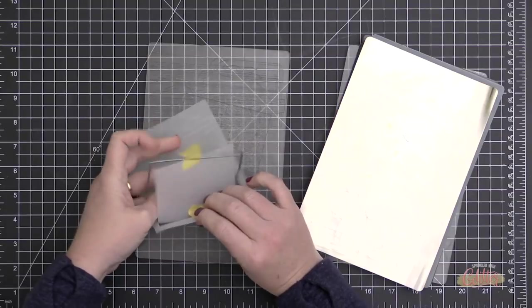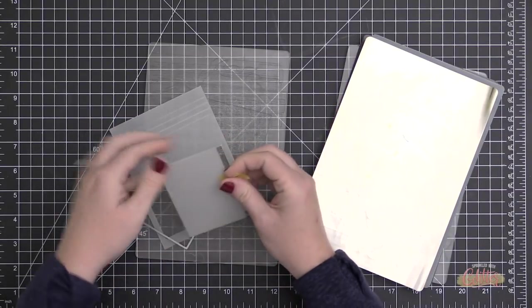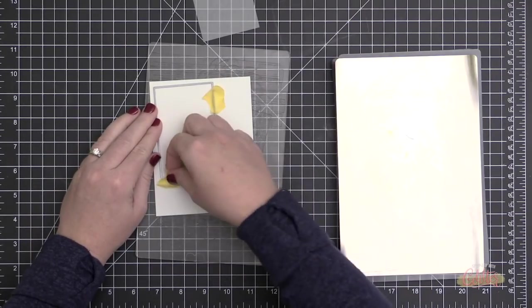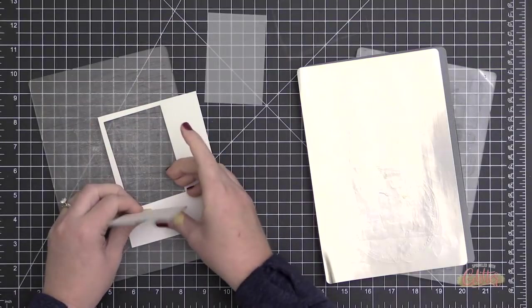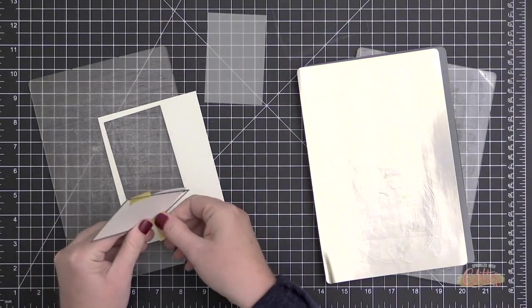So I'm taking some vellum here and I'm die cutting a rectangle. This rectangle is from the My Favorite Things A2 Rectangle Stacks 2 Dynamic set. I'm die cutting some vellum with that as well as some white cardstock.